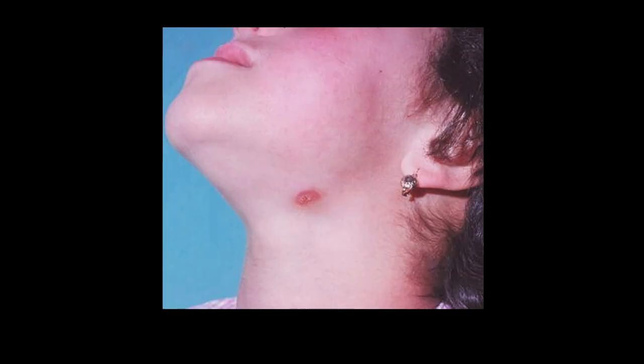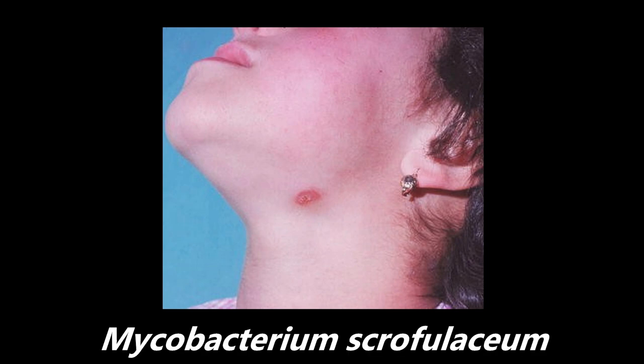This next image is a little bit more difficult — maybe a little bit less common and lower yield to be tested — but I do want to make sure that you guys see it. This is an example of Mycobacterium scrofulaceum. This is another type of infection that commonly occurs in kids, typically around one to three years old, that causes cervical lymphadenitis, appearing as a rash on the neck. This is inflammation of the lymph nodes in that area. The causative organism is Mycobacterium scrofulaceum.